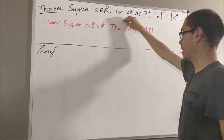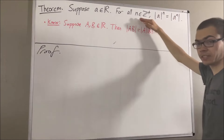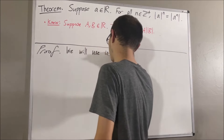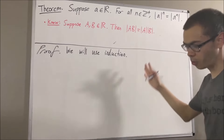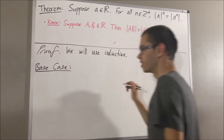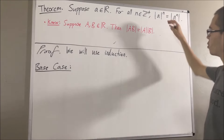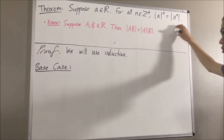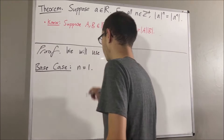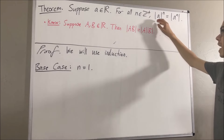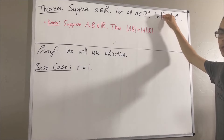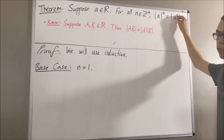Since we're trying to prove a statement about all positive integers, let's use induction. So let's start with the base case. In the base case, we're trying to prove that this is true where n is equal to 1. So we want to show that the absolute value of a to the power of 1 is equal to the absolute value of a to the power of 1.